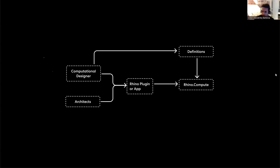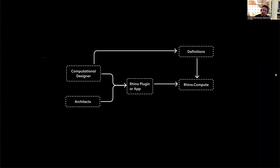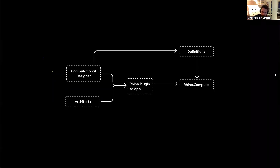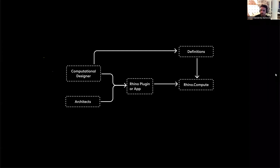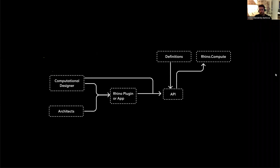We built a Rhino plugin, and things got interesting — the computational designer was no longer just running things but doing the creative part of building scripts, while the users consuming the definitions were architects. The diagram starts decoupling the computational designer to a place of great value: creating and designing solutions, with architects as the clients. Our Rhino plugin was a simple WPF MVVM-pattern plugin. But then we got hooked on the idea of going outside of Rhino and building a web app, so the Rhino plugin project was paused.